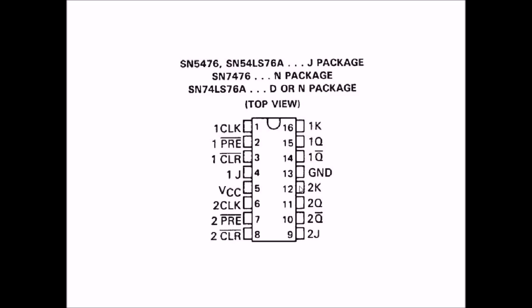Here I want to use it in the toggle mode. What that means is if I tie J and K high, that is to 5 volts or VCC, we input the square wave here on the clock pin, pin 6.